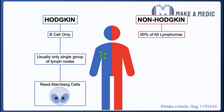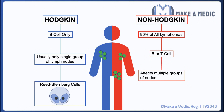Non-Hodgkin lymphoma on the other hand is far more common — about 90% of all lymphomas — and they can be B or T cell in origin. They differ from Hodgkin lymphoma in that they tend to affect multiple groups of lymph nodes.